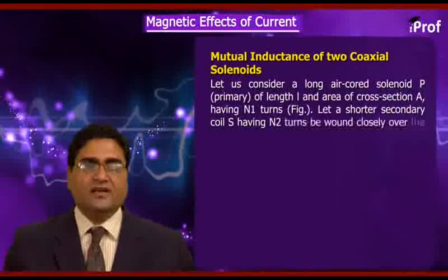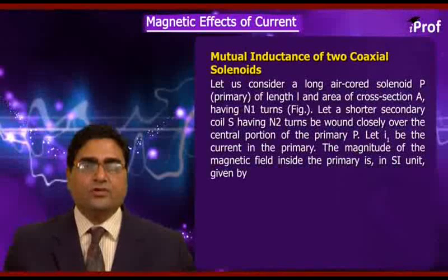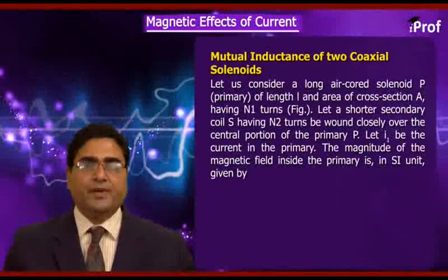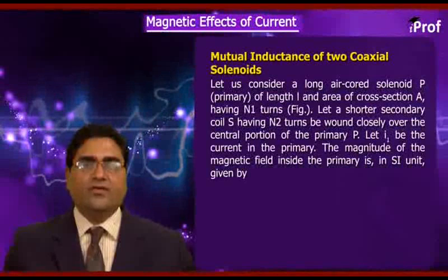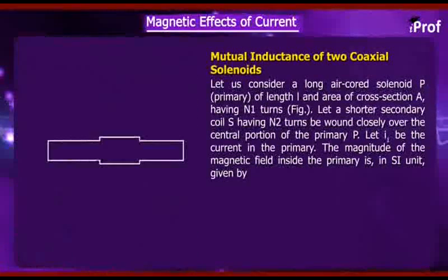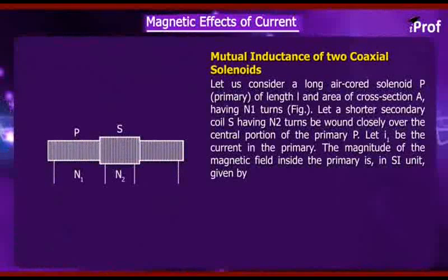Let us consider a long air core solenoid P (primary) of length L and area of cross-section A having N1 turns. Let a shorter secondary coil S having N2 turns be wound closely over the central portion of the primary P.